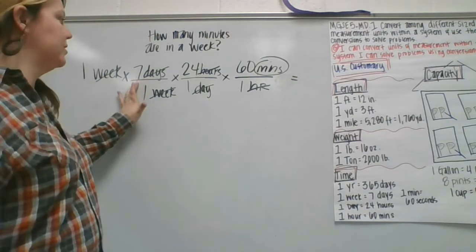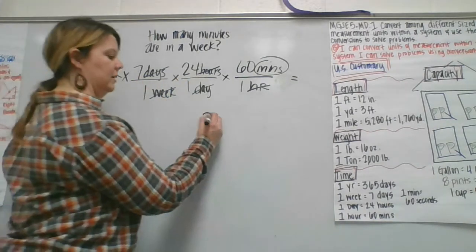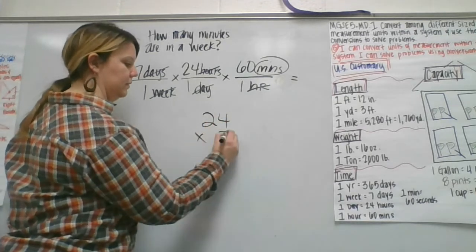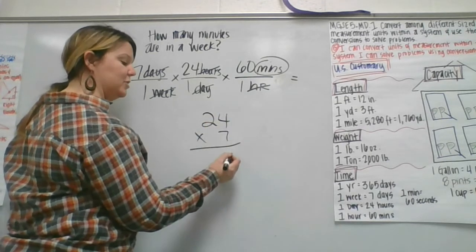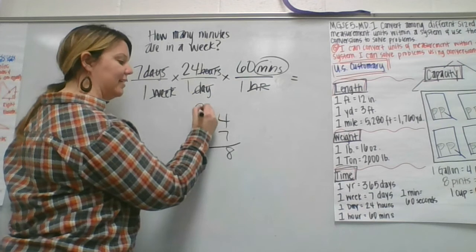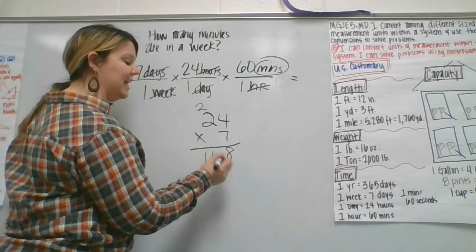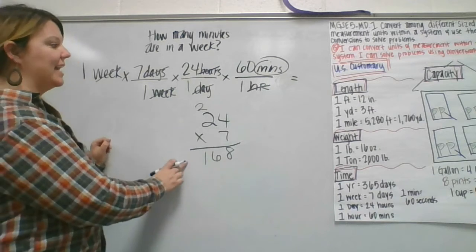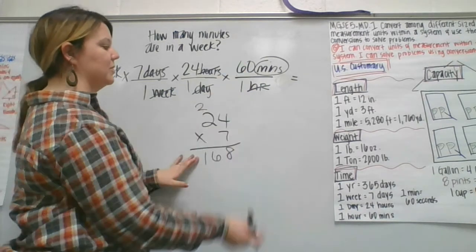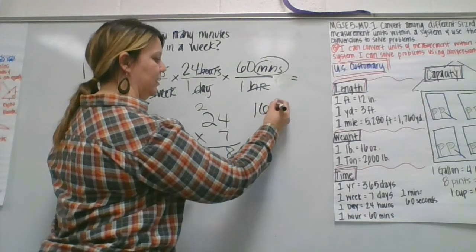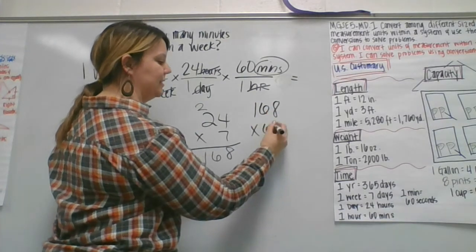Then I need seven times 24. Seven times four is 28. Eight goes here, carry the two. Two times seven is 14, plus two is 16. That's 168. And then I need to take my 168 and I need to multiply it times 60.